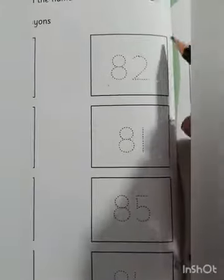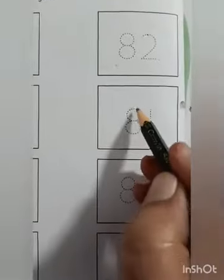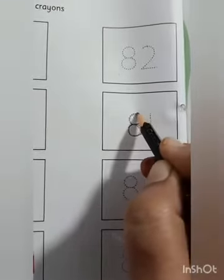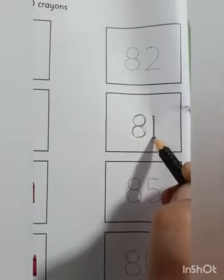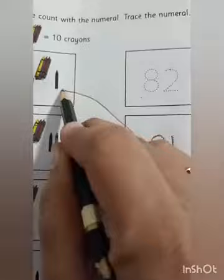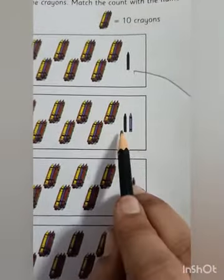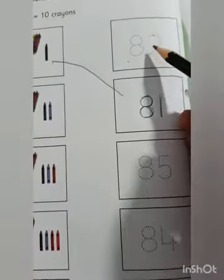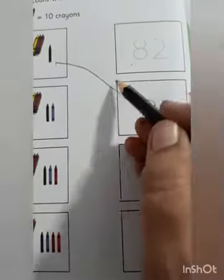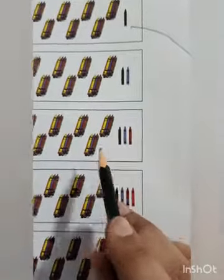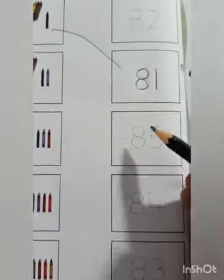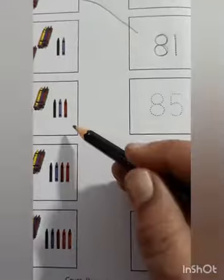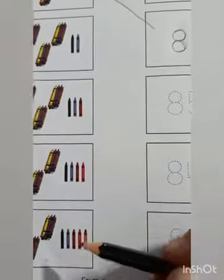The next step is to search where 81 is on the page. You will trace the number — while tracing, say the number — then match it with the correct box. Here we have 80 and two loose ones making 82, so search for 82, trace the number, say it, and match it with the correct box. Then count for 83, trace the number, say the number, and match it with the correct box.